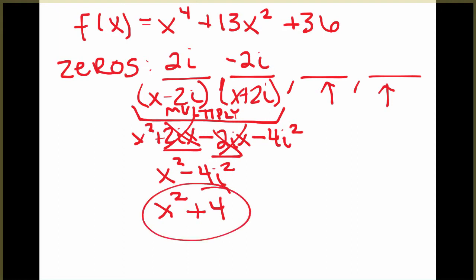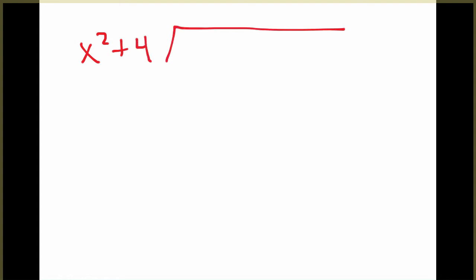So rather than dividing separately by x minus 2i, x plus 2i, we will divide by x squared plus 4. So we'll have to use long division here. So let me get a new slide so we can have a little bit of space. Okay, with our long division, we're going to divide by x squared plus 4. And we're going to divide our original.